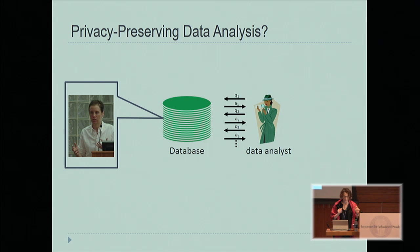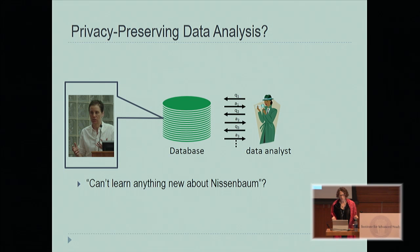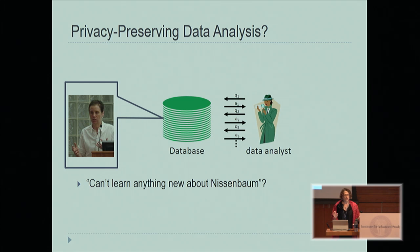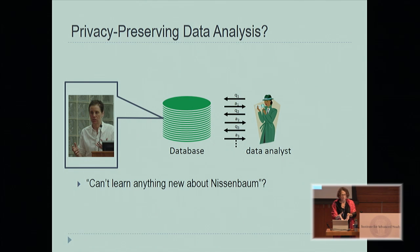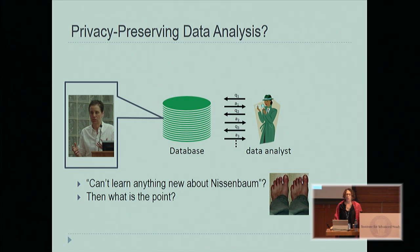Here's a data set. Helen Nissenbaum is in the data set. The question is: what kind of privacy guarantee do we want to make to Helen? The first thing you would try — this intuition dates back at least to Tour de Linius in 1977 — says that the data analyst, by interacting with the data set, shouldn't be able to learn anything new about Nissenbaum that the analyst didn't know before. So Helen may have a website with all kinds of information about herself. Maybe we say we shouldn't learn anything new about Helen that she didn't post about herself.